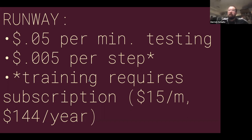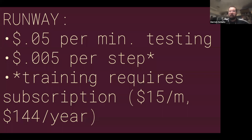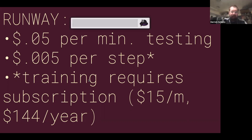When you're training: everyone who creates a Runway account gets one free training of 3,000 steps — we'll talk more about that in week four. If you decide you want to do more training than that one free setup, you need to buy a subscription: $15 a month or $144 a year, and you can cancel at any time. Once you have that plan, training still has a cost — half a cent per step.